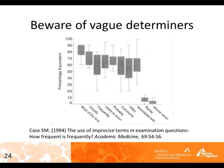On vague determiners: a study polled test question writers to define what percent each term means. 'Rarely' could mean 5% or 12%. 'Often' is anywhere from 40% to 70%. This drives home the point that vague terms in questions introduce uncertainty and reduce the question's ability to distinguish who knows the content from who doesn't.